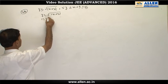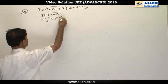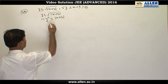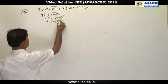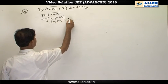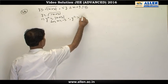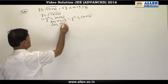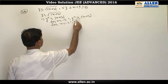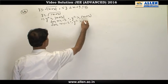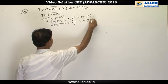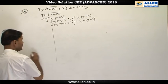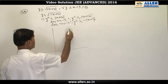After squaring, y² ≥ |x + 3|. We consider two cases: for x ≥ −3, y² ≥ x + 3; and for x < −3, y² ≥ −(x + 3).